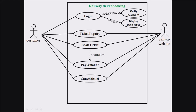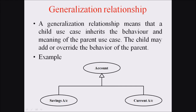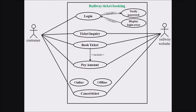Finally, we consider the generalization relationship. In generalization, different classes can be derived from a parent class. This parent-child class relationship is represented using a triangle symbol. In our example, pay amount can be subdivided into online and offline, which can be generalized into the pay amount procedure. This is an extended version of our use case for the railway ticket booking system.